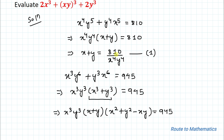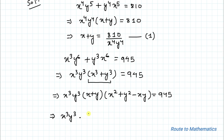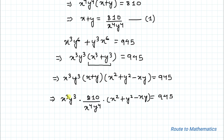From equation 1 we have x + y = 810 divided by x⁴y⁴. Let's substitute that value here: x³y³ · (810 / x⁴y⁴) · (x² - xy + y²) = 945. Now x³y³ gets cancelled with x⁴y⁴, leaving 810 · (x² - xy + y²) / (xy) = 945.